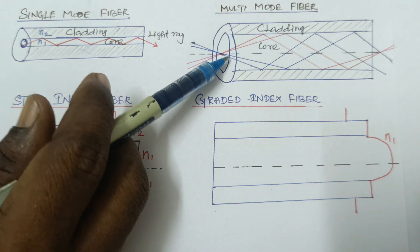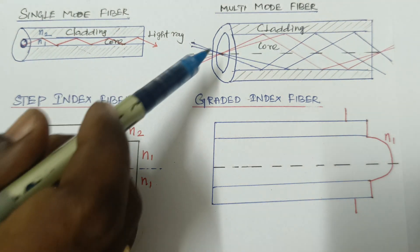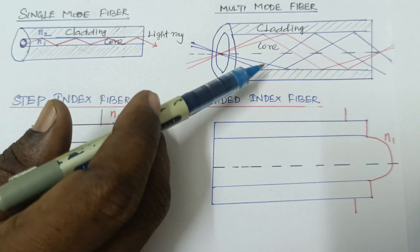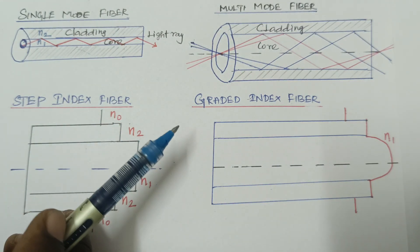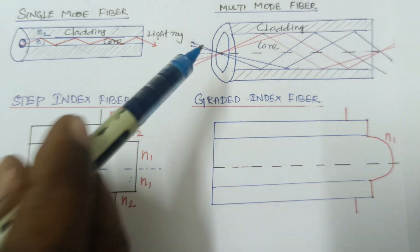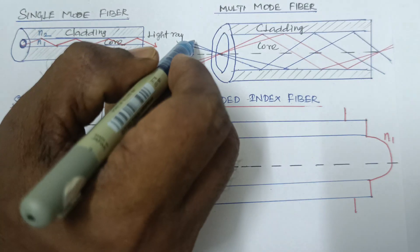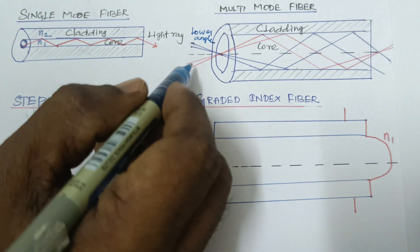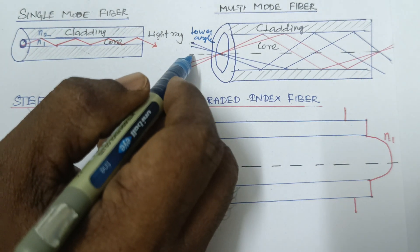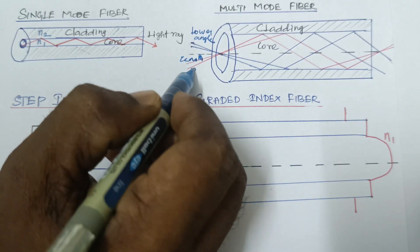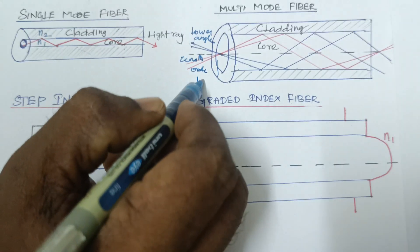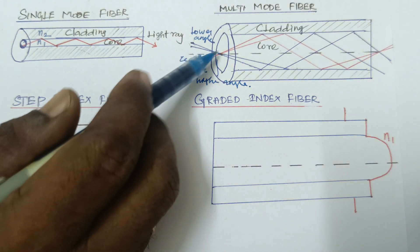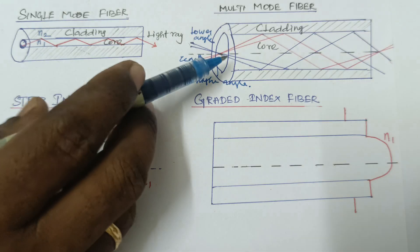The second type based on modes is multi-mode fiber. Multi-mode fiber means more than one mode is transmitted through the fiber. In multi-mode fibers, light can travel through different paths — a lower angle path, a higher angle path, and the zeroth order along the neutral axis. More than one wave propagates through the fiber, which is called multi-mode fiber.